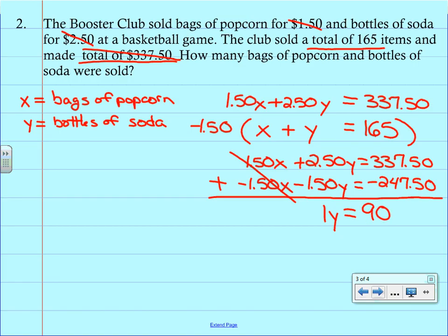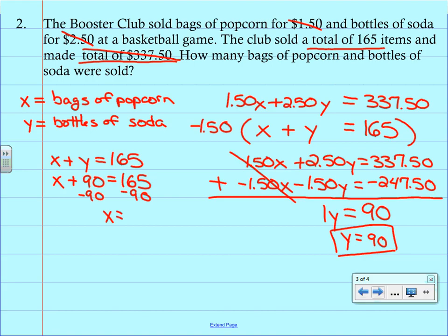Now I know I said on the last problem to go back to the top equation to plug it back into. But please don't. The bottom equation is so much easier. We have X plus Y equals 165. So if you know you sold 165 items and 90 of them were bottles of soda, all you have to do is subtract to get how many popcorn bags we sold. So subtract 90 from each side and then X is 75.